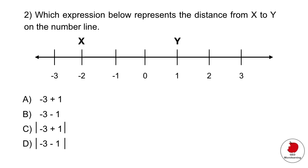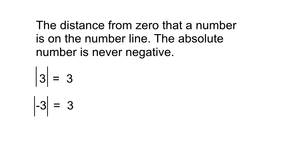Question two. This question tests two things: whether you can understand information from a number line, and whether you know what an absolute value is. If you look at options C and D, you see vertical lines surrounding the numbers — this is known as an absolute value. The distance from zero that a number is on the number line, and the absolute value is never negative.